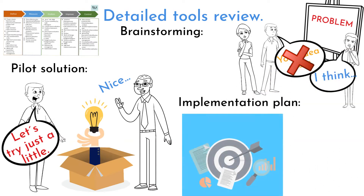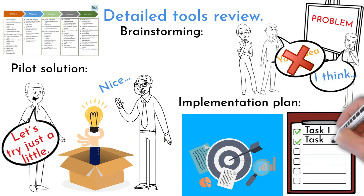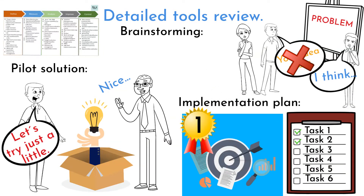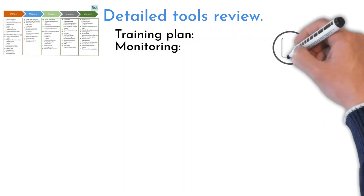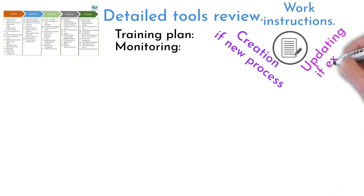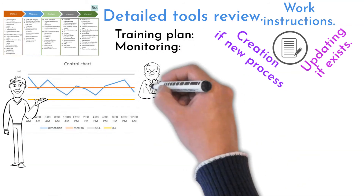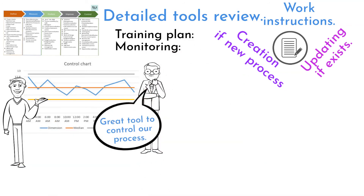Once you know what the solution is and it is a complicated one, think about using an Implementation Plan. Plan carefully the steps that will guide you to the final result. Training Plan and Monitoring is about creating or updating instructions, and letting the people working in the process know what changes will be made. Importantly, create metrics that will help the process owner after project finalization and transition to controlling the new process.